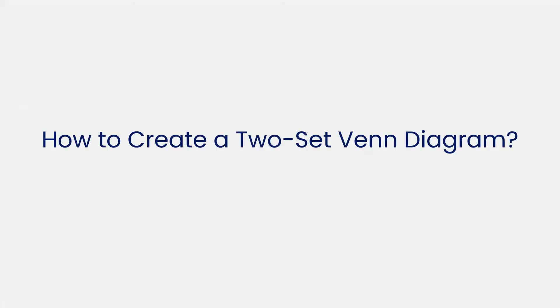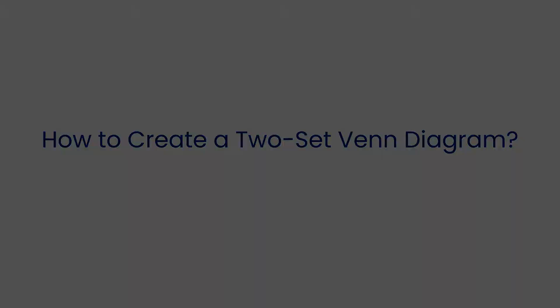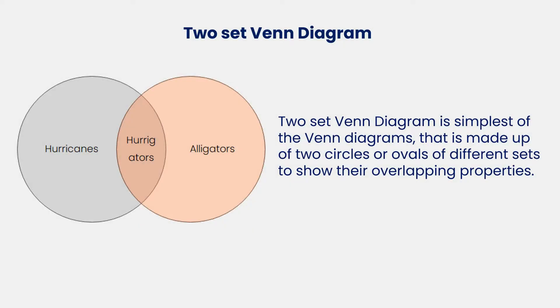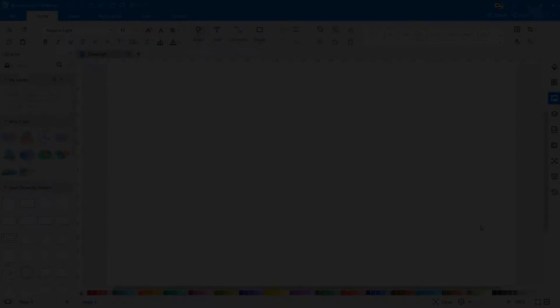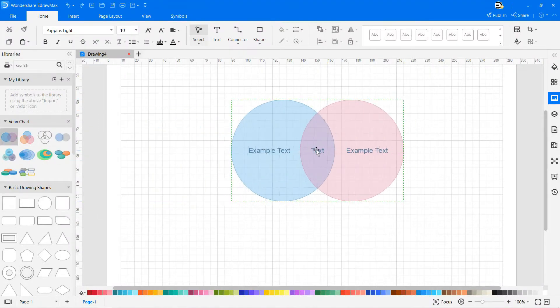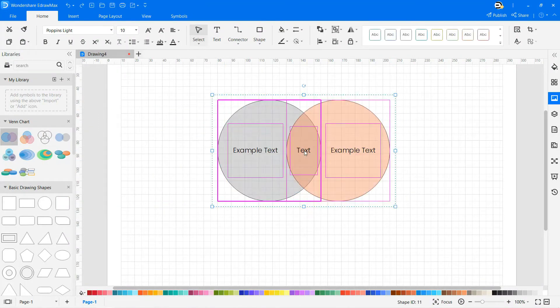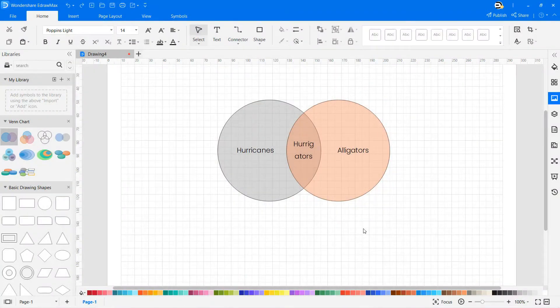Now let's learn how to create a two-set Venn Diagram. A two-set Venn Diagram is the simplest of Venn Diagrams, and it's made up of two circles or ovals of different sets to show their overlapping properties. Now drag and drop the symbols from the library as shown earlier, and modify as needed for your two-set Venn Diagram.